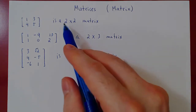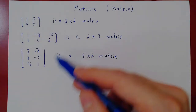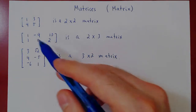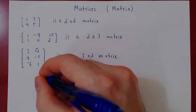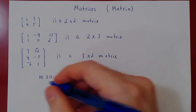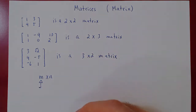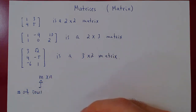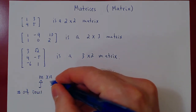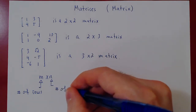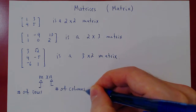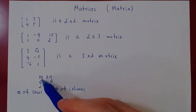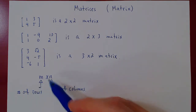In general, any matrix is a rectangular array of numbers consisting of a certain number of rows and columns. When we write an m by n matrix, the first index is always the number of rows and the second index is always the number of columns. So an m by n matrix has m rows and n columns.